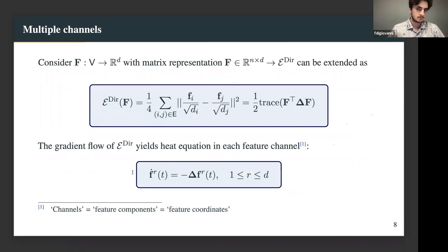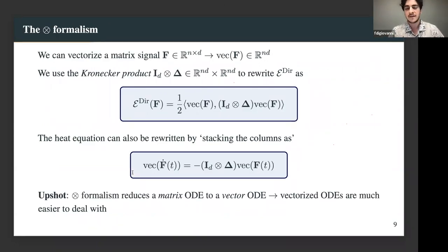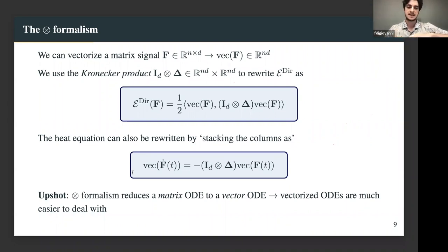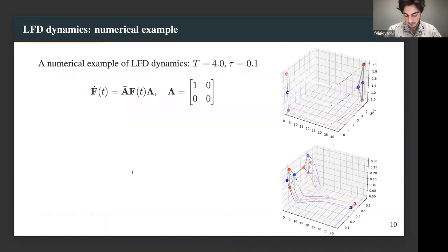This generalizes to higher dimensions: we replace the L2 norm with the L2 norm of d-dimensional vectors. Throughout the paper, most of the theory builds on vectorizing the solution whenever you have a matrix differential equation - using the Kronecker product to transform a matrix ODE into a vector ODE, making everything more compact and easier to analyze.